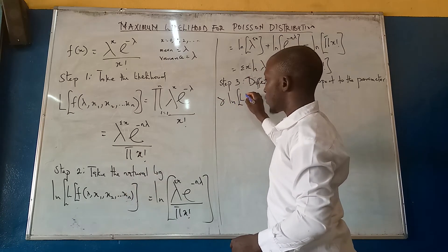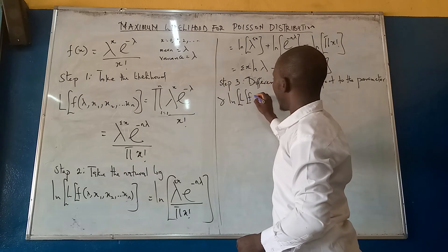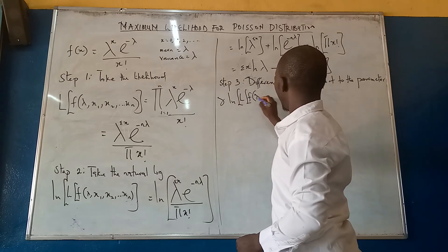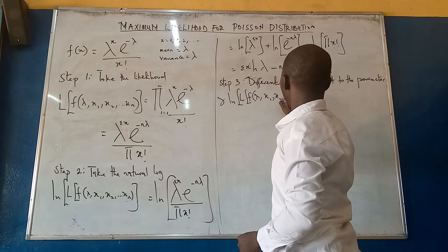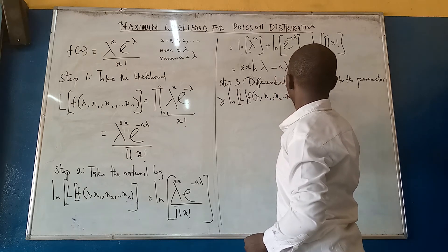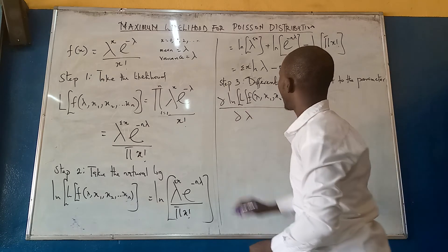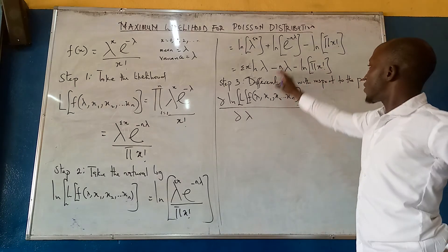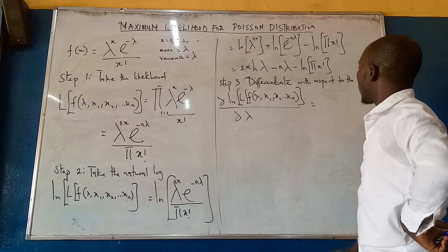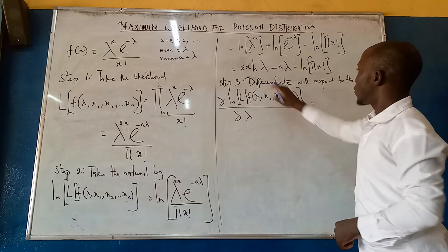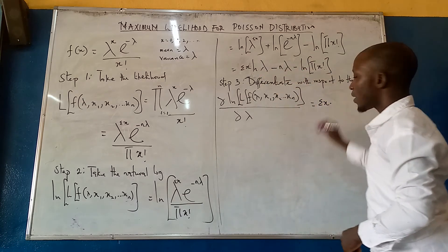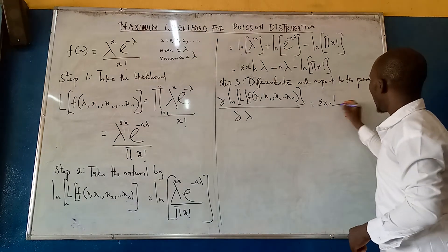And the parameter is lambda. So d/d lambda of ln of likelihood of lambda, x1, x2, dot dot dot xn, divided by d lambda, equals to, we are differentiating this with respect to lambda. When we differentiate this, we are going to have summation x multiplied by 1 over lambda.